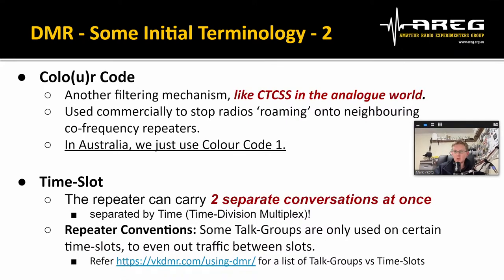DMR has a feature called a color code — think of it as another filtering mechanism, like CTCSS in the analog world. Commercially it's there to deal with repeaters on the same frequency in similar areas. In Australia for amateur DMR, we just use color code one. If you don't have this right, you won't get into the repeater. The default is almost always color code one. Next up, we have time slots — DMR repeaters and hotspots can handle two conversations at once, separated via time division multiplexing.